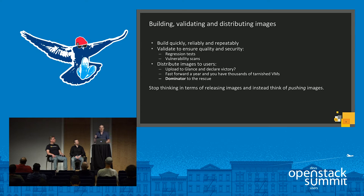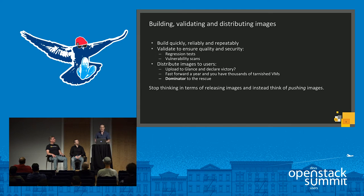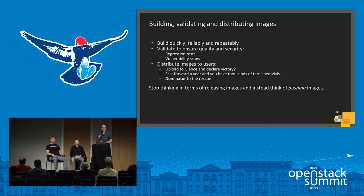A key takeaway is that when you're thinking about managing images, you shouldn't think in terms of releasing images but in terms of pushing. When you think about releasing images, you think: upload to Glance and I'm finished. Your quality bar isn't that high because if people spin up new VMs with an image that isn't quite good, they just revert to the old image. But if you're going to push the image to all your running systems, that's when the fear factor comes in — and that's good, because that means you'll set a high quality bar for yourself because you don't want to screw this up.